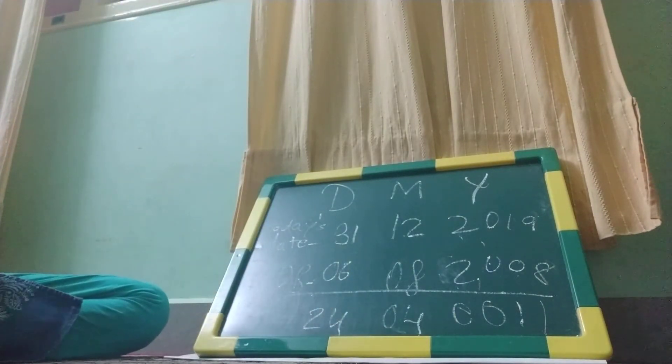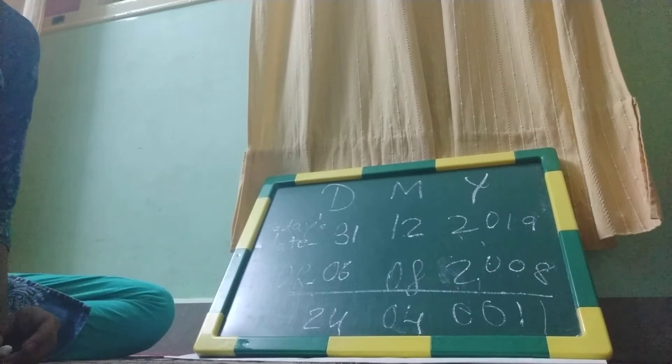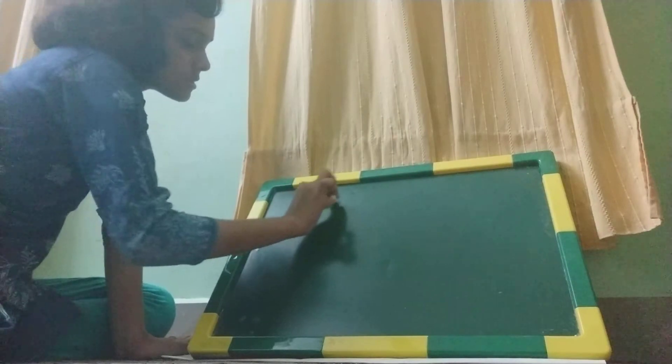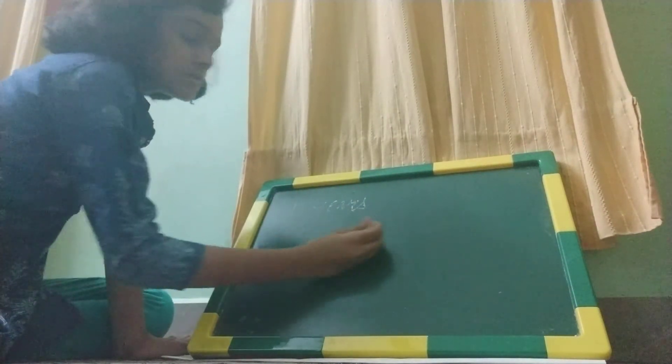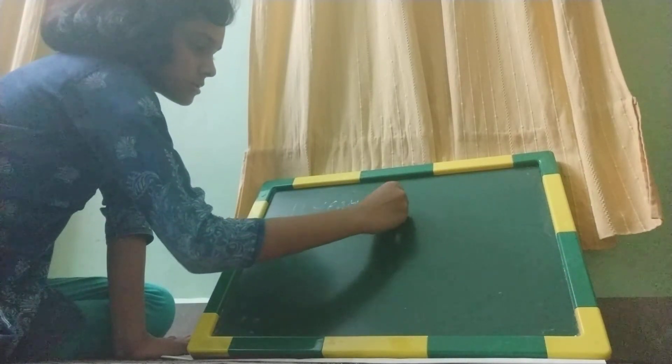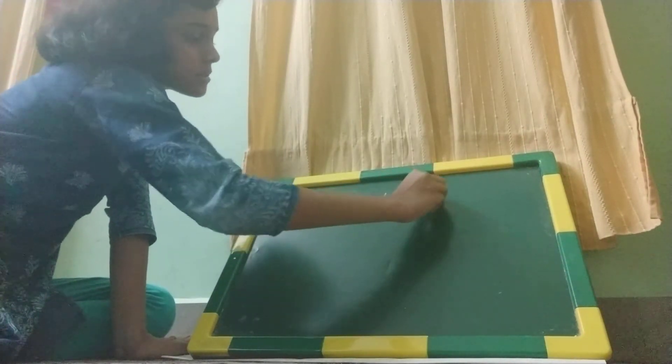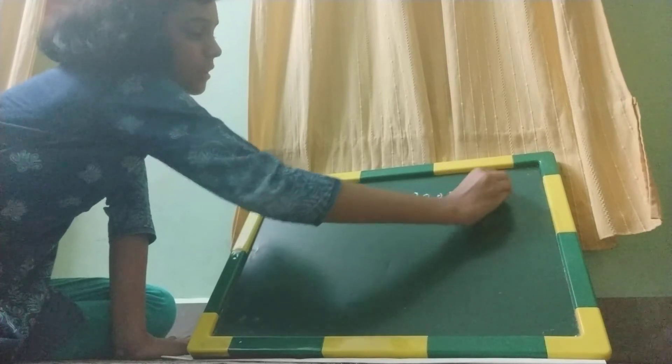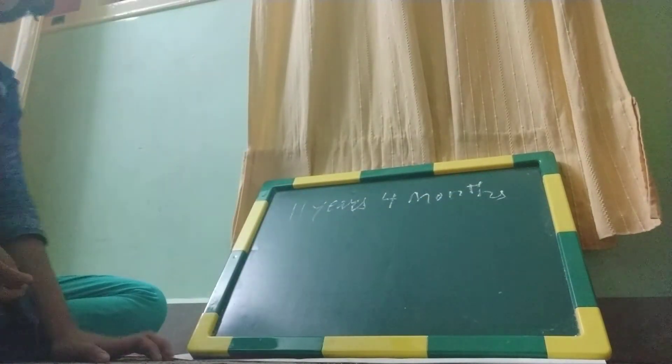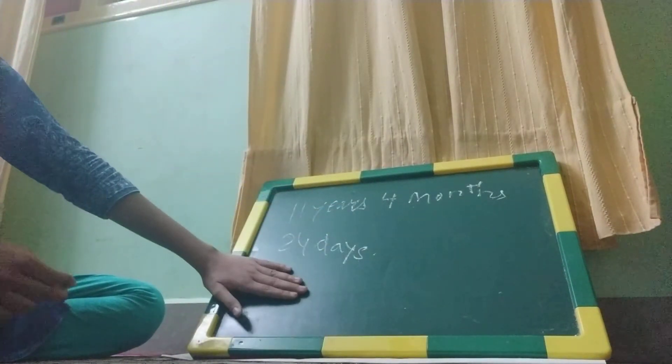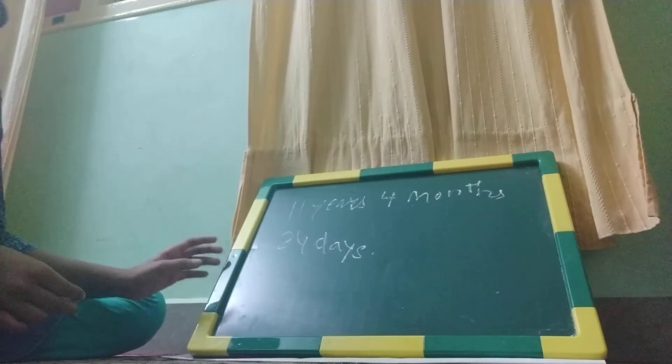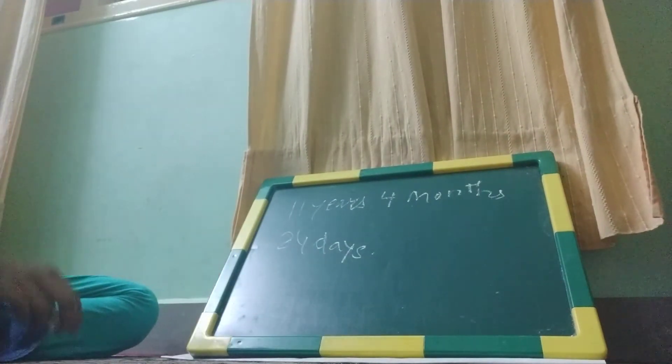So my today's age is 11 years, 4 months, and 24 days. So with this you can know what is your age also.